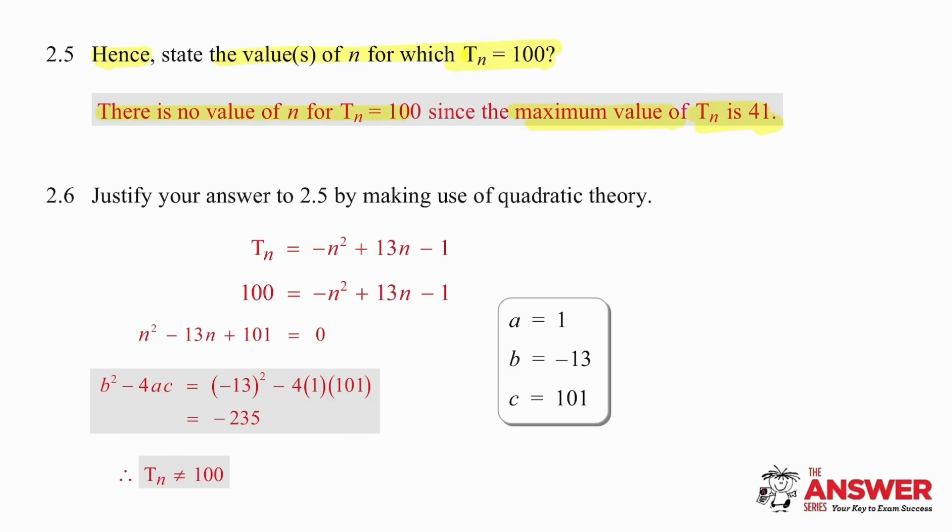They have come back at us with a different question, asking us to explain differently why this is the case. And they've given us some help by telling us to use quadratic theory. Quadratic theory means that we are going to use delta, which means we are using b squared minus 4ac. So if we look at our information, we have a quadratic formula, and we are supposed to be making that equal to 100 to solve for n. So we set it up as an equation, put that equation into standard form so that it equals 0.